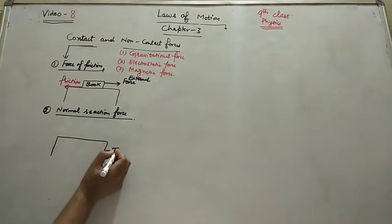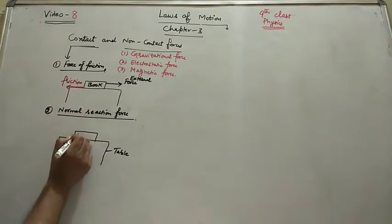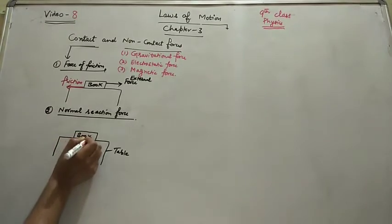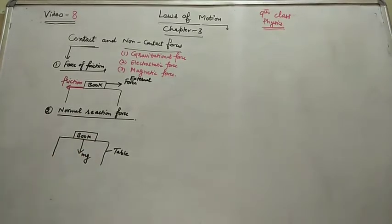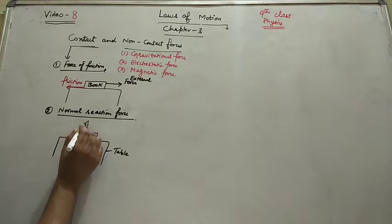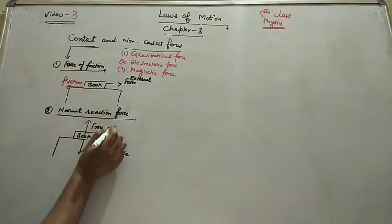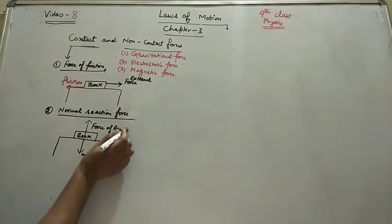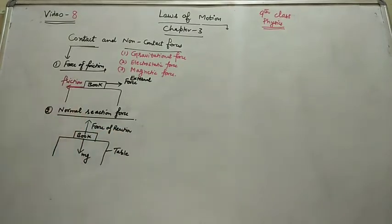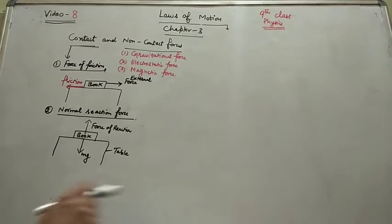Same example I will consider for this also. Here is the table top. One book you can consider on its surface. This book weight is acting downward. And table top will exert a normal reaction which can easily balance this force.